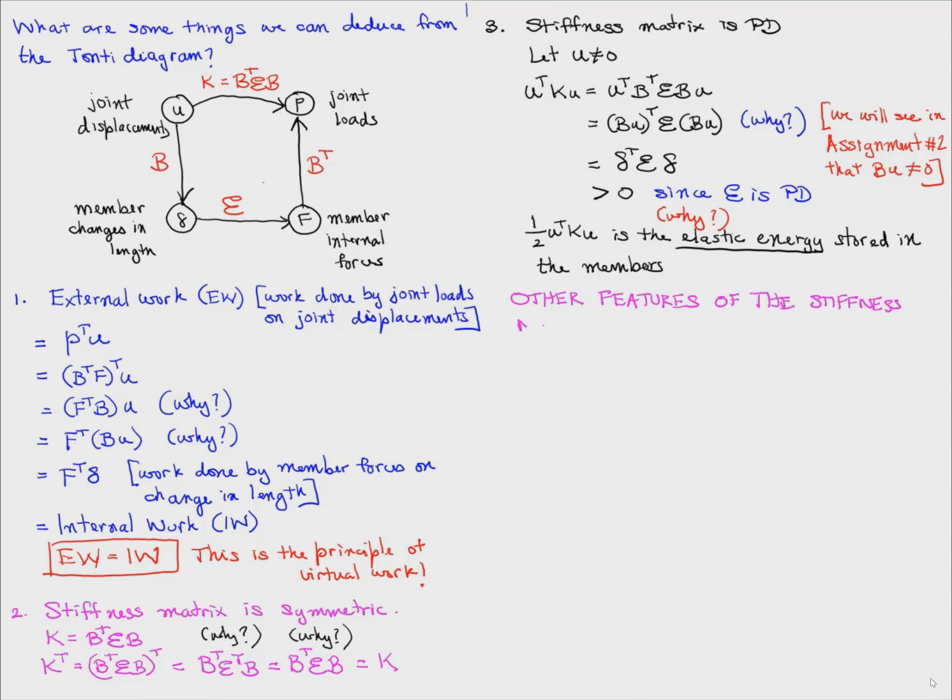There are some other features of the stiffness matrix that don't directly come from the Tonti diagram, but this seems like a good place to look at those features as well. The stiffness matrix is sparse. What this means is for large structures, the stiffness matrix will have lots of zeros in it. Think about why that may be the case. One hint is because of connectivity. Not all joints are connected to each other. Only joints that are connected by members participate in the stiffness matrix. So that's the reason for the sparsity.